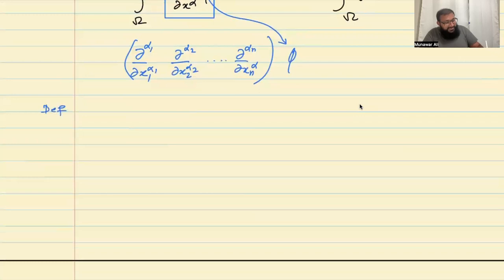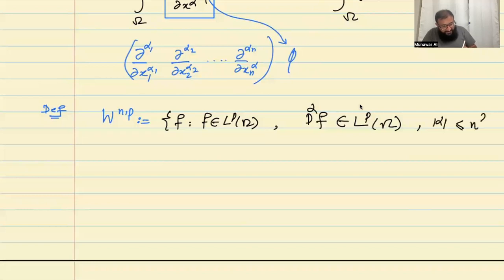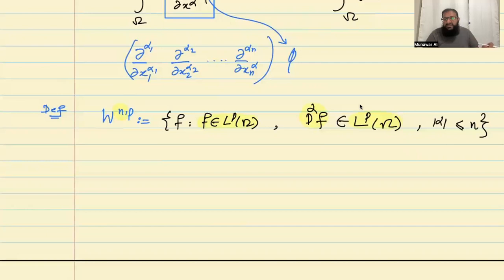After defining the general weak derivative, I define Sobolev spaces in a more general way — the WNP Sobolev spaces. This is the set of functions F such that F is in Lp, and all alpha-th order derivatives are in Lp, where the order of alpha is less than or equal to n. So the function and all its derivatives up to order n must be in Lp.